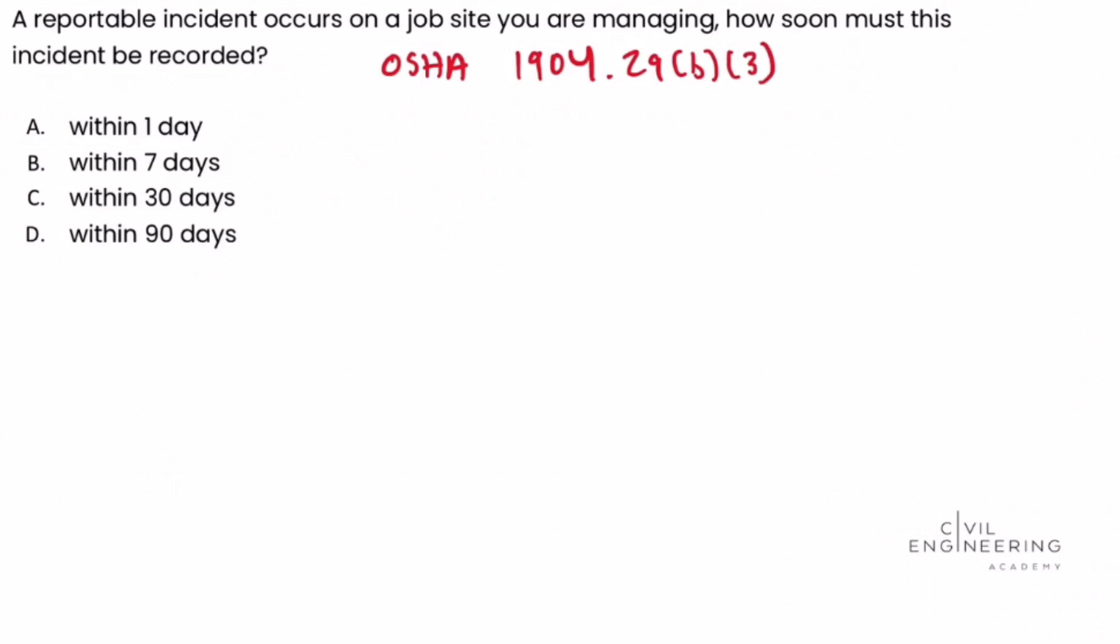In that section, you can see that after a reported incident occurs, and that's considered an injury or illness, you must enter the information on OSHA log 300 and the 301 report form within seven days of receiving information that the injury or illness occurs.